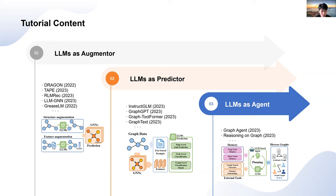The third one is large language models as agents. In an agent-based approach, large language models act as intelligent agents that deliberately call external tools to solve graph-related problems. This includes tasks like self-planning and decision-making, where the large language models determine the appropriate tools, such as graph neural networks or sentence embeddings, to assist in solving the given graph tasks.